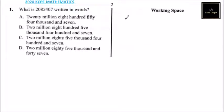2-0-8-5-4-0-7. You can put marks here. Count three digits from the right, another three digits. So we have two million.